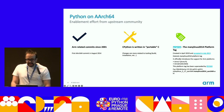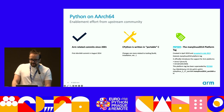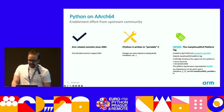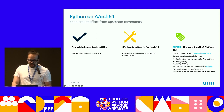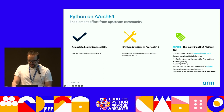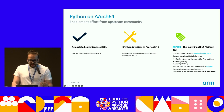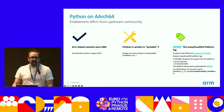In 2019, PEP 599 was created and accepted. This PEP defines the ManyLinux 2014 platform tag, and it is important because it officially introduces support for ARM platforms like ARMv7 and ARMv8. ARMv7L is the 32-bit version, and ARMv8 is ARM64.